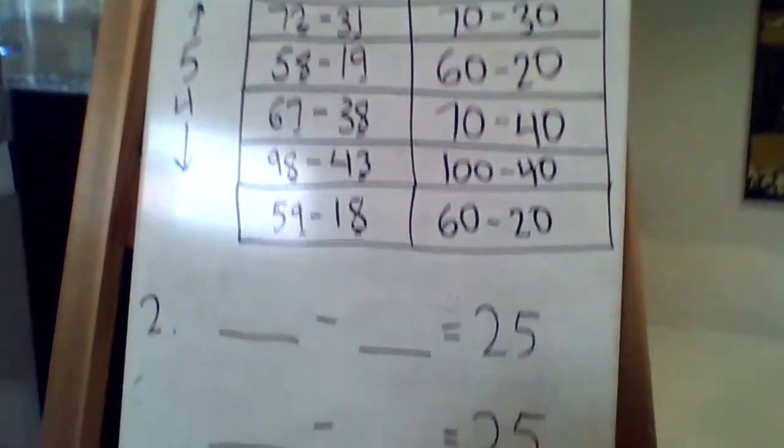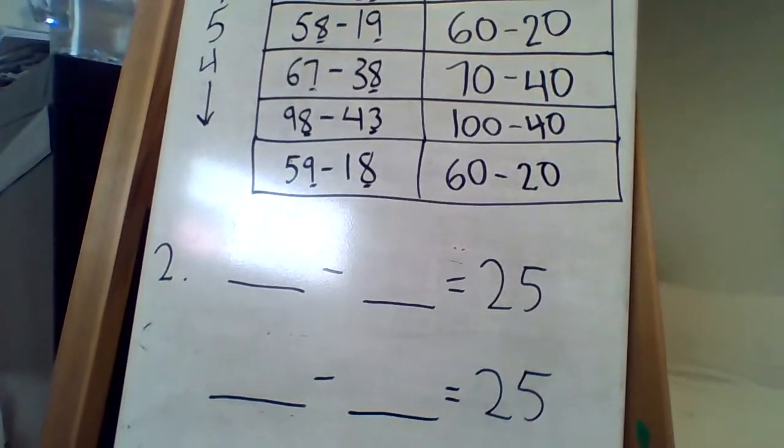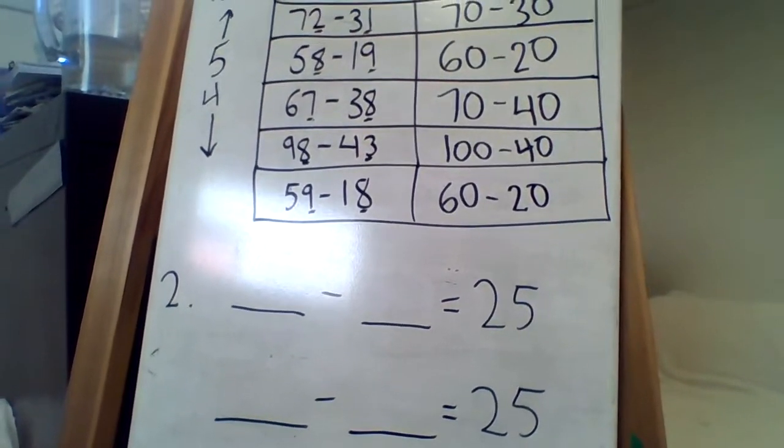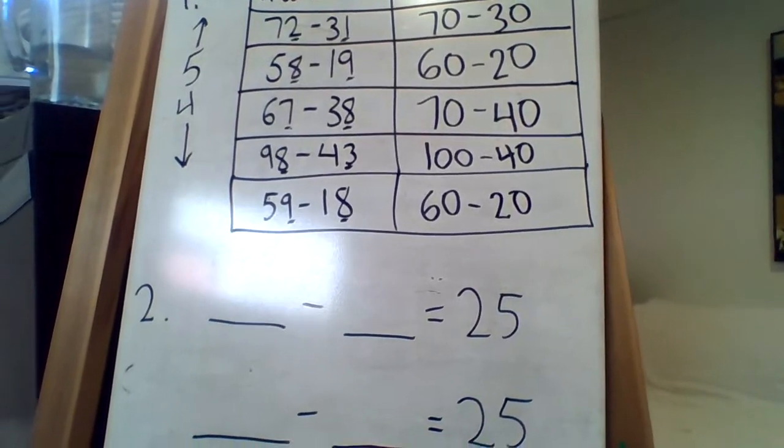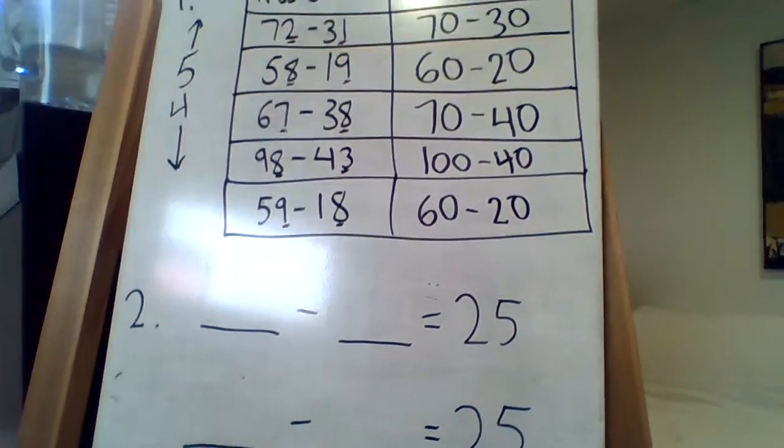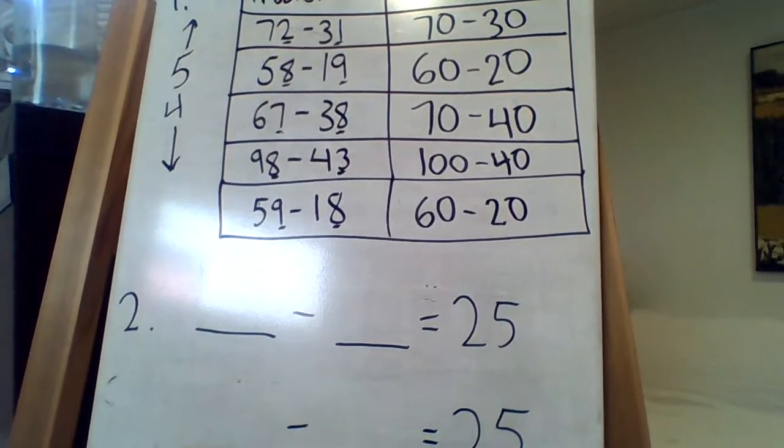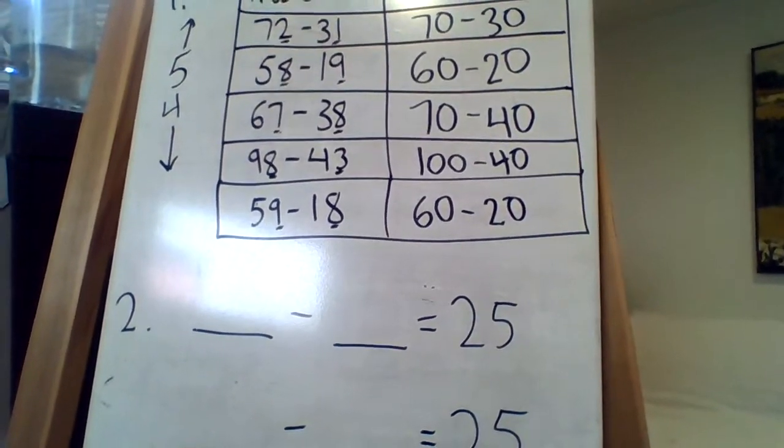Now the truth is we could give a billion or more possible answers. We could say 1 billion 25 minus 1 billion equals 25. We could say 1,025 minus 1,000 equals 25.